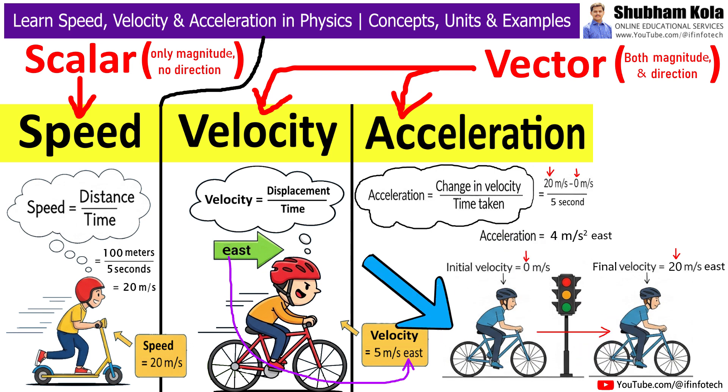Now, think about when you start your bike from a traffic signal. At the beginning, your velocity is 0 meter per second. After 5 seconds, it becomes 20 meters per second east. That change in velocity means you have accelerated.